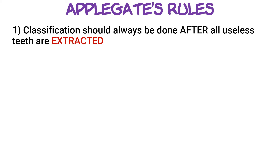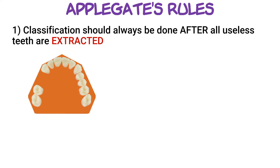Rule number 1 says that the Kennedy classification should always be done after all useless teeth have been extracted. Take this arch for instance — we have a single edentulous area that's surrounded by teeth both on the front and the back. Thus, this would be a Class 3 classification under normal circumstances.